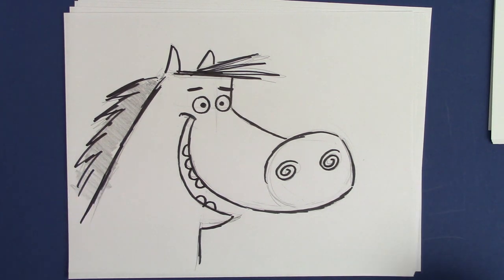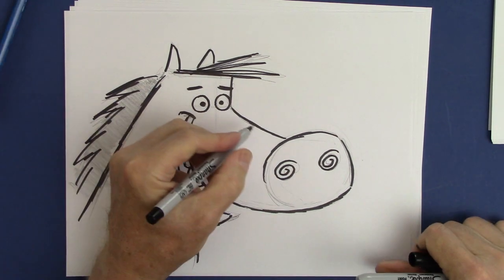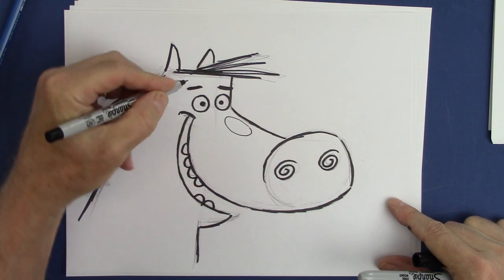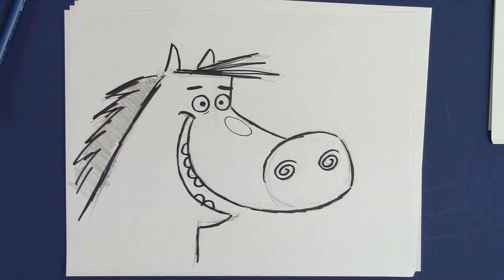If you want to use a little spot, a little marking, put it right here. That's a good place for one. And there is your crazy kooky horse.